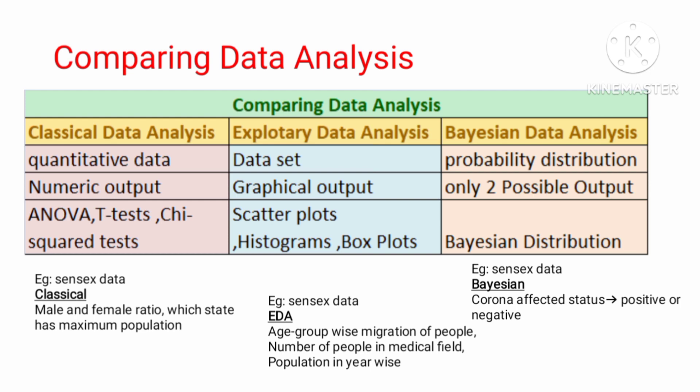Classical data analysis deals with quantitative data, working with top parameters and sequences of quantitative values. Exploratory data analysis works with all kinds of data. Bayesian data analysis is based on probability and distribution finding. EDA outcomes are graphical outputs — visualizations such as histograms and bar charts. Classical data analysis focuses on numerical details with detailed explanations.